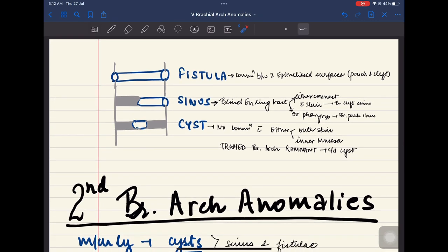Now what is a fistula, what is a sinus, what is a cyst? Fistula is a communication between two epithelialized surfaces. Here fistula means if there is a communication between the pouch and the cleft. Sinus is a blind ending tract. Either it connects the skin or it connects the pharynx. If it connects the skin, it is a branchial cleft sinus. If it connects to the pharynx, it is a branchial pouch sinus. Now what is a cyst? Cyst is when there is no communication with either outer skin or inner mucosa. So it is a trapped remnant. Then it is called a cyst.